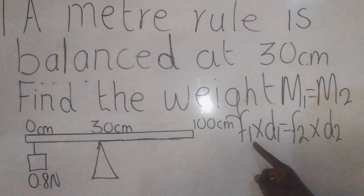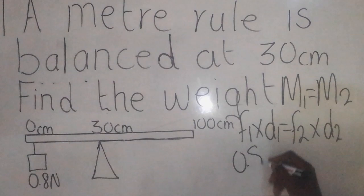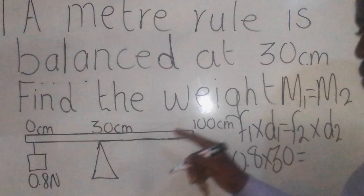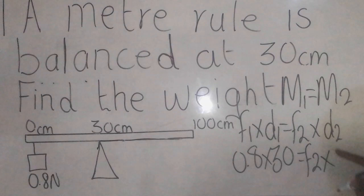Now, what is force 1? Force 1 is this force here, 0.8 Newtons times distance 1. From 0 to 30, so you put 30 there. What is force 2? We don't know. In short, it is the one which we want to find. So you say force 2 times distance 2.